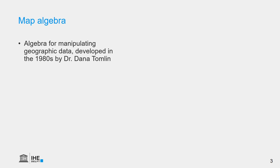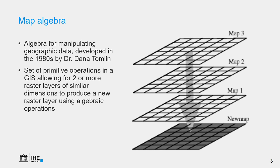The concept of map algebra was introduced by Dr. Dana Tomlin in the 1980s. In this concept, raster layers are considered as objects that we can use in mathematical calculations, like we do algebra. Therefore, it's called map algebra. And we can use map algebra for multiplication, divisions of maps, all the mathematical things that we would do with a calculator.